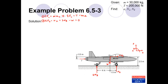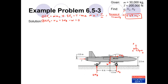The X direction equation lets us immediately solve for acceleration. Dividing thrust by mass: 200,000 newtons divided by 30,000 kilograms gives approximately 6.67 meters per second squared. That is the acceleration of the aircraft. Looking at the Y direction equation, we know the weight from mass times g, but we have two unknowns — N_A and N_B — and only one equation, so we don't have enough information. We need to add a third equation.